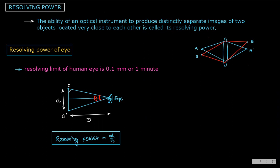In this diagram, O and O-dash are the two objects, and this is the eye with which we are watching. The angle theta subtended should be one minute. If you want to find the resolving power, the formula is: small d divided by capital D.